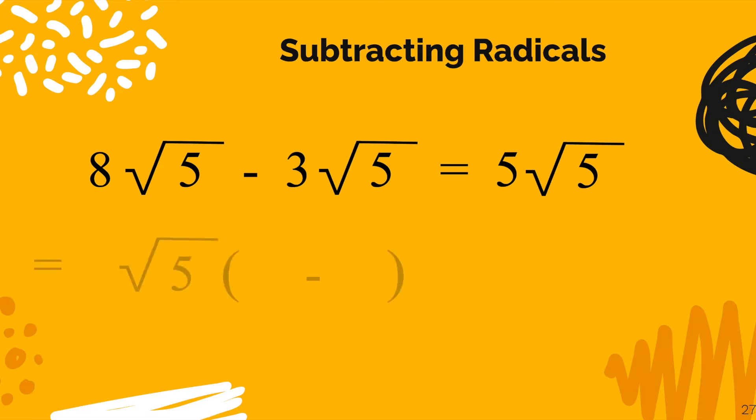Now, I would love for you to see that you could also do the distributive property and factor out the radical 5. That leaves behind 8 minus 3. 8 minus 3, of course, is 5. The 8 minus 3 gave me the 5, which just reiterates that 8 radical 5 take away 3 radical 5 is 5 radical 5. Any way you think about it.